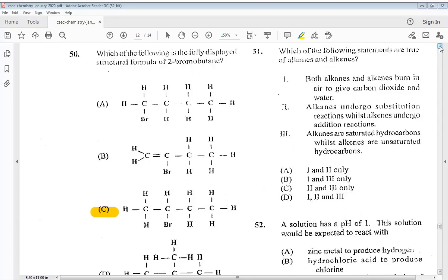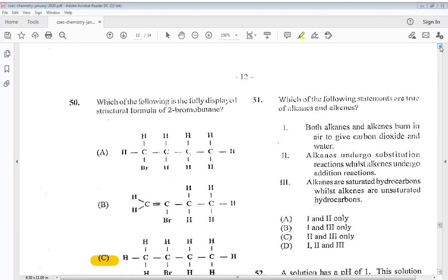Question 51. Which of the following statements are true of alkanes and alkenes? 1 both alkanes and alkenes burn in air to give carbon dioxide and water, 2 alkanes undergo substitution reactions while alkenes undergo addition reactions, 3 alkanes are saturated hydrocarbons while alkenes are unsaturated hydrocarbons. So the answer would be D, all of them.